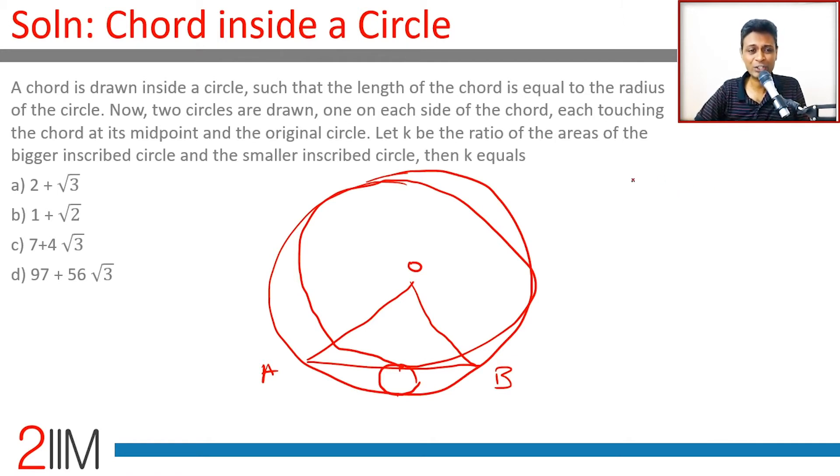We need to find the ratio of the areas of bigger to smaller. This radius is r, this is r1, this is r2. We find the ratio of r1 to r2, we are through and wonderful. Look at triangle OAB - this is radius, this is radius, AB is also radius, so OC is √3/2 r.